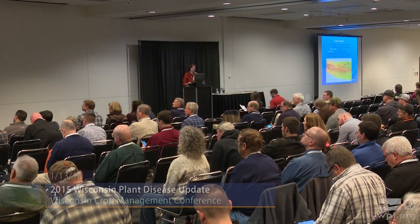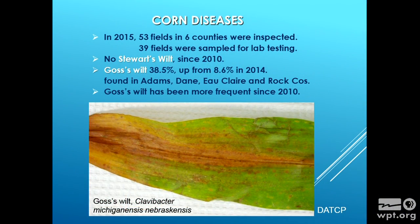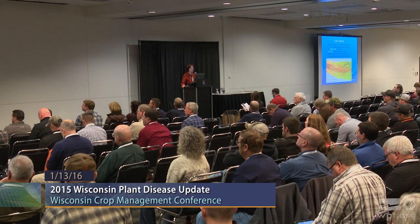Onto corn diseases: we inspect corn for phytosanitary certification, which is a service that DATCAP offers. In 2015 we inspected 53 fields in 6 counties — 39 fields received certification. That's not a huge number given how much corn there is in Wisconsin, so this is kind of a spot check. We test those samples for everything just to see what might be out there. We haven't found Stewart's wilt since 2010, which is really good — that's a regulatory concern, although it's mostly deregulated now and Canada doesn't check for it anymore.